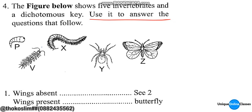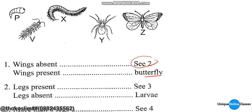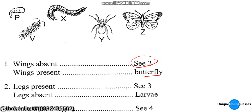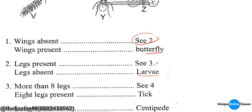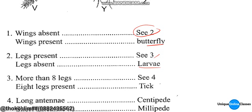Step number one: wings absent. Step number two: wings present — that's a butterfly. Step number two: legs present — step number three. Legs absent — that's a larva. More than eight legs — step four. Eight legs present — it's that organism.